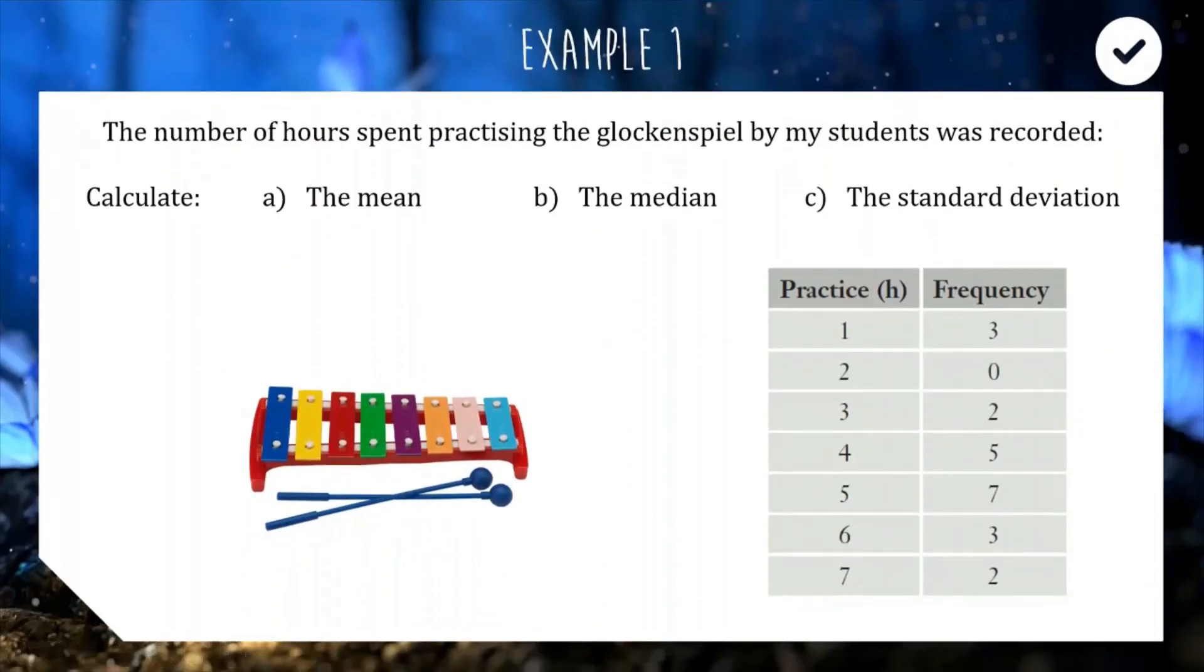So for our first example, we have the number of hours spent practicing the Glockenspiel by my students recorded in this table. So this is hours practice, number of students, essentially. So three students practice one hour, two students practice seven hours. We're going to look at how we can enter this table into our trusty Casio calculator and find these three measures. So I'll just pause here while I get my emulator ready.